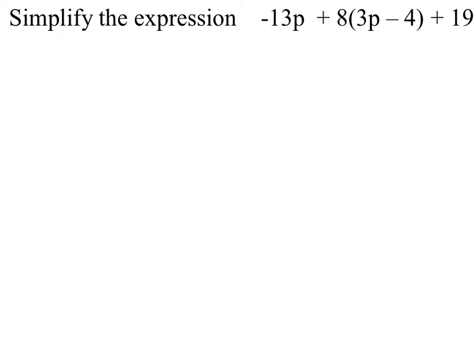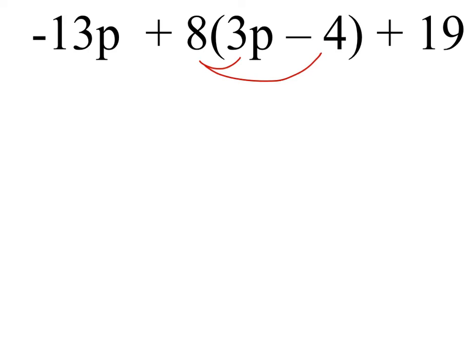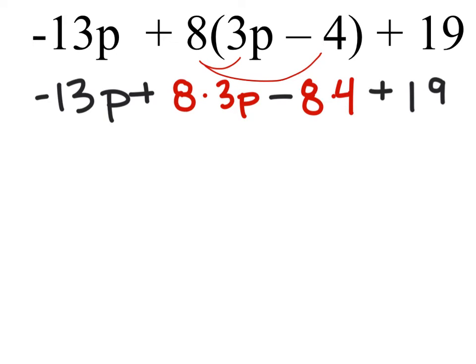And we also need to distribute this 8 first before we do anything else in terms of combining like terms. So when we do that, this first distribution is 8 times the 3p, and that is minus 8 times 4 here. And we can see that nothing else changed.